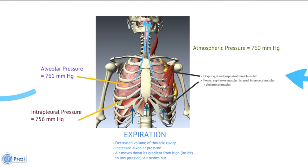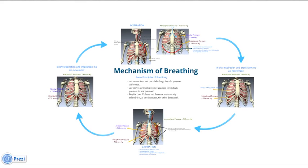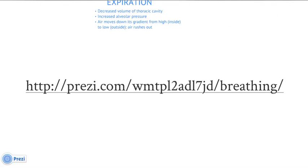As the thoracic cavity decreases, the outer surface of the lungs — attached to the thoracic cavity — decreases in volume as well. Decreasing lung volume increases pressure inside the lungs, raising it above atmospheric pressure — for example, to 761. Air then moves from high pressure inside to low pressure outside, and that is breathing out. This is the mechanism of breathing, and you can visit the provided link to explore this presentation further.